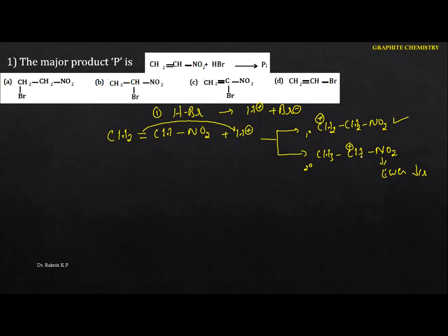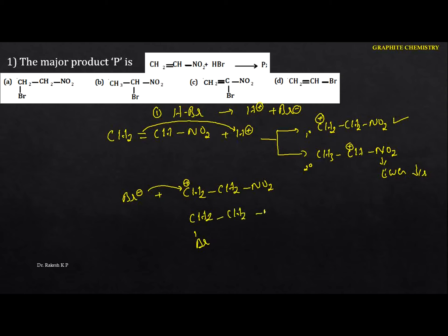Although it is a secondary carbocation, with the electron-withdrawing group present the stability decreases. So we take the carbocation +CH2−CH2−NO2, and the nucleophile Br− attaches to it, forming Br−CH2−CH2−NO2. Hence the option is A.